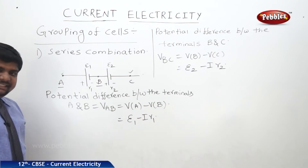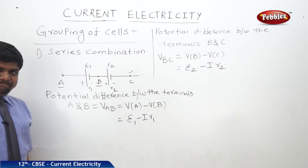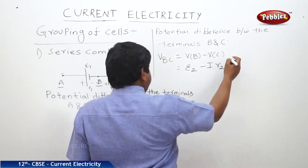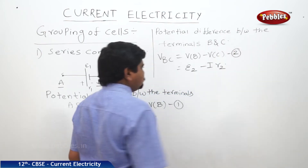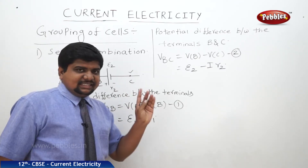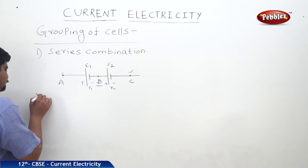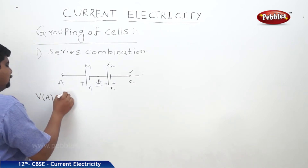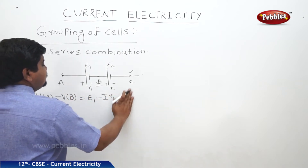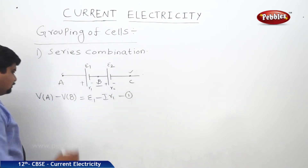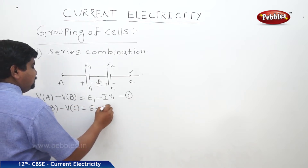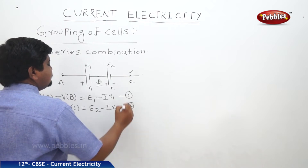Now I want to find out VAC. VAC is nothing but VA minus VC. VA minus VB is E1 minus IR1 — let us say this is equation 1. VB minus VC is equal to E2 minus IR2 — let us say this is equation 2.